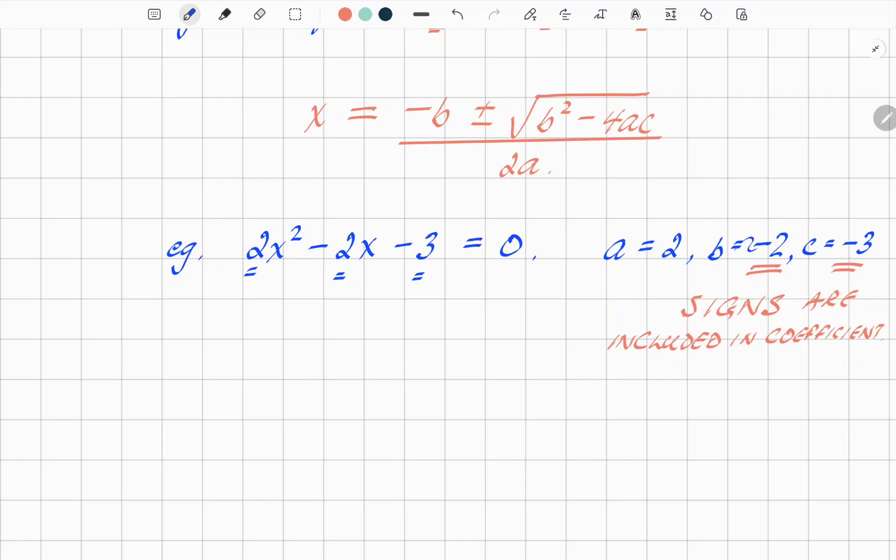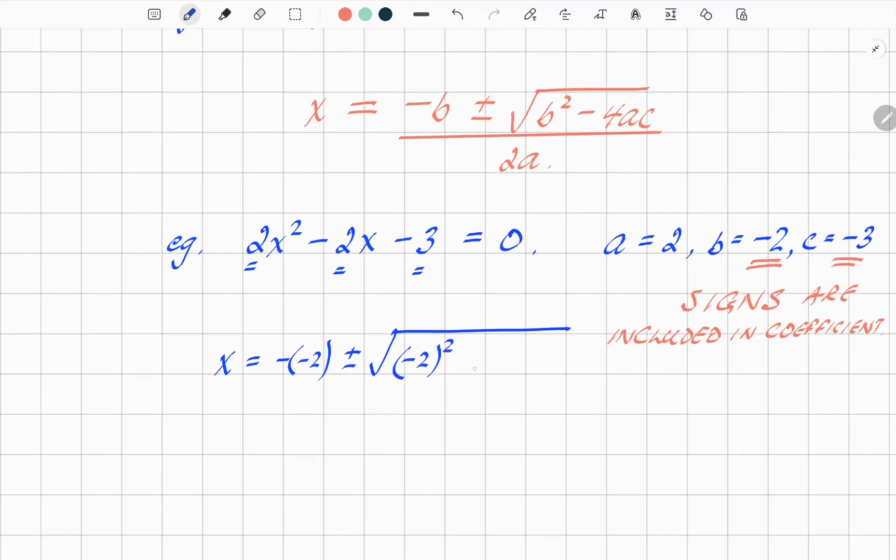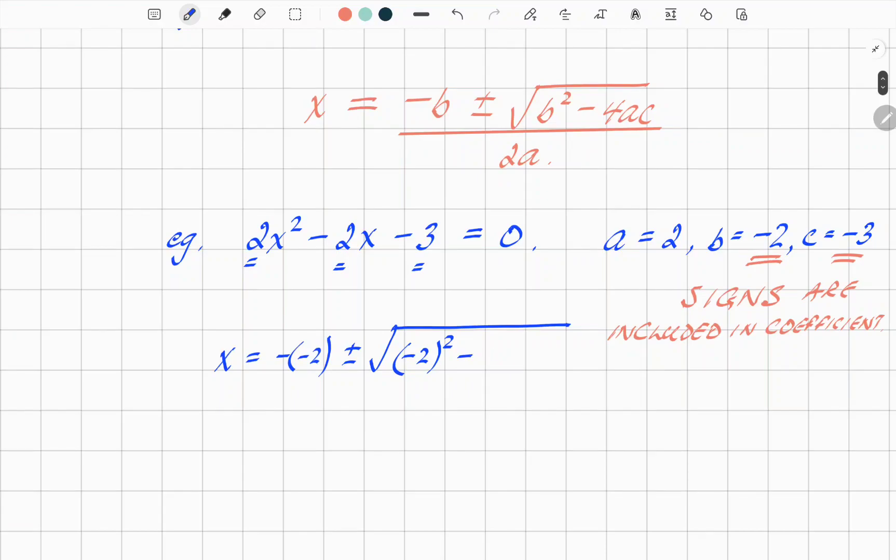So using that and these values we have here, we can go to the quadratic formula and say minus b, so that's minus minus 2, plus minus minus 2 squared, so that's b squared, minus 4 times a times c. So a is 2, c is minus 3, and then 2 times a, which is 2 times 2 again.